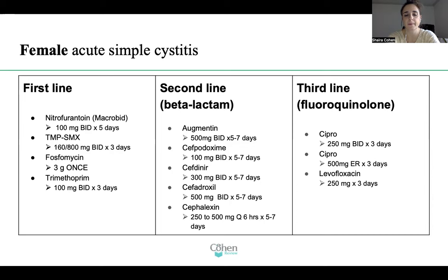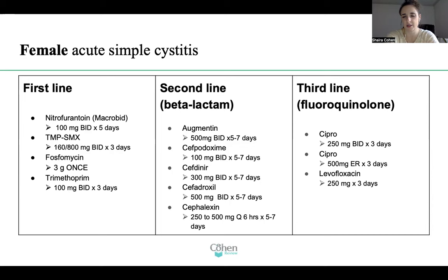If you can't give first or second line due to allergies, third line would be your fluoroquinolones — Cipro 250 mg twice daily times three days, or 500 mg extended release times three days, or levofloxacin 250 mg times three days. You may have heard Cipro is for below the belt and Levaquin is for respiratory infections above the belt, but in reality both are fluoroquinolones and both can be used for UTIs. Don't be surprised if levofloxacin appears as a correct answer — it's a valid choice as well.